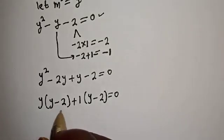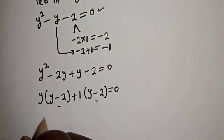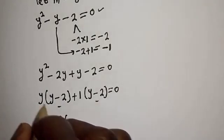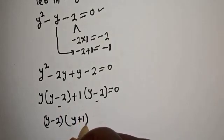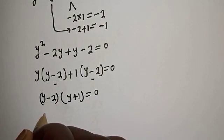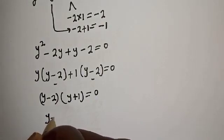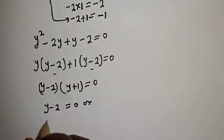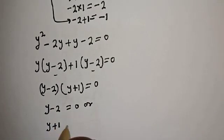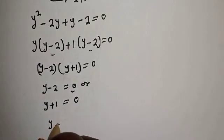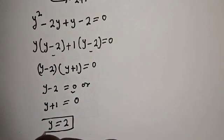We can see that y minus 2 is common here: y minus 2 bracket, times y plus 1, is equal to 0. You can see there are two cases here. y minus 2 is equal to 0, or y plus 1 is equal to 0. From the first case, y is equal to 2.